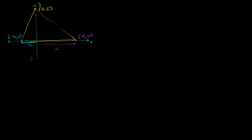Any triangle can be represented this way. Now let's think about its medians and the centroid. I'm only going to do two of the medians, because we know the third median will also intersect at the same centroid. The midpoint of one side has coordinates (a/2, c/2) — that's (0+a)/2 and (c+0)/2. The midpoint of the other side is (-b/2, c/2) — that's (-b+0)/2 and (0+c)/2.